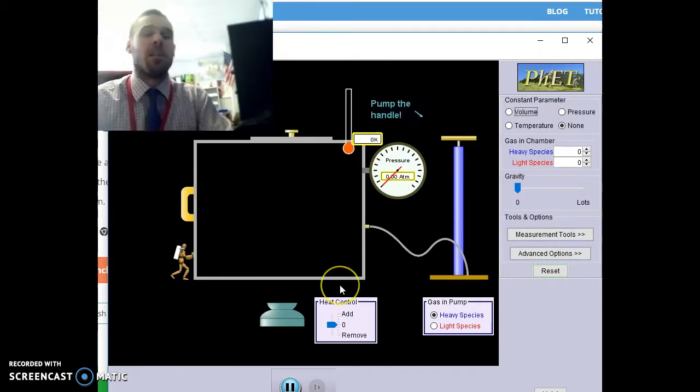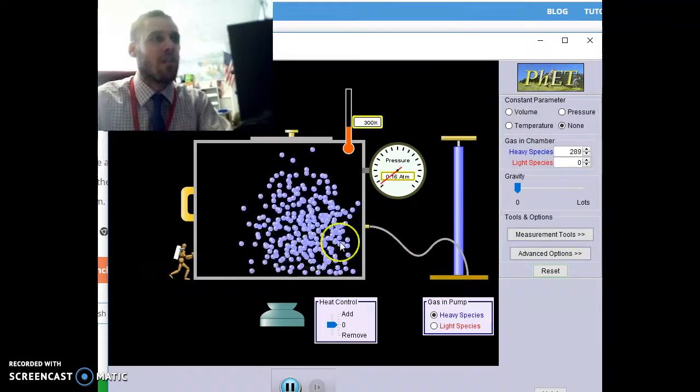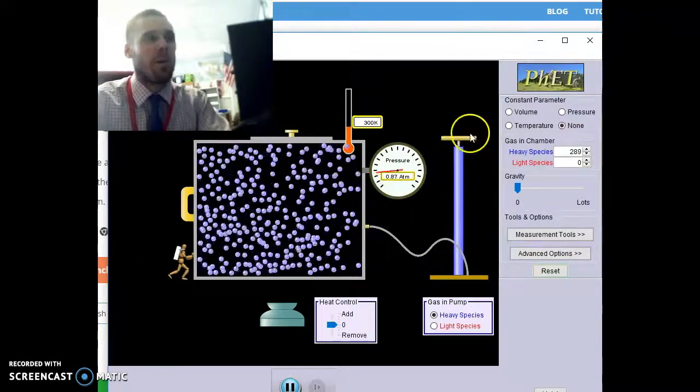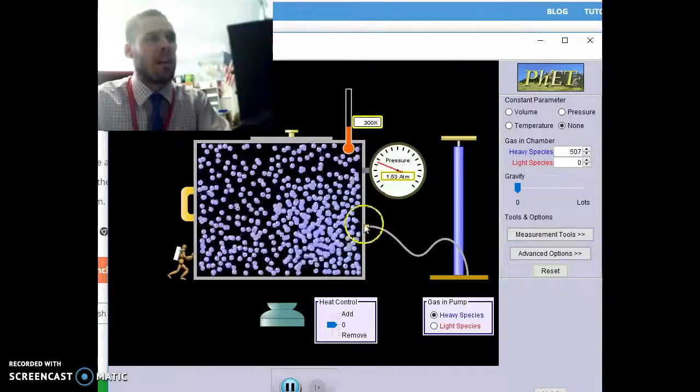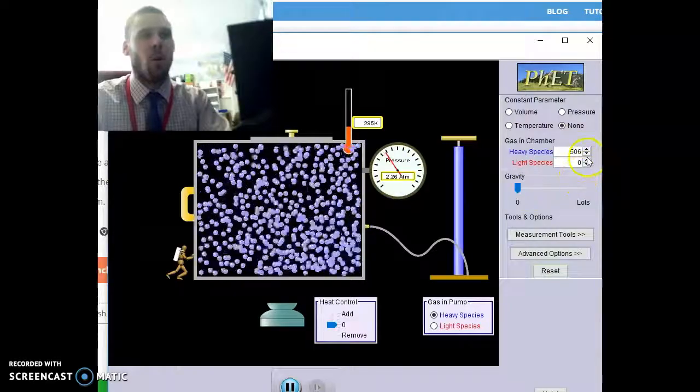The first of which is going to be the amount of particles and how pressure is going to respond. There's two ways that you can get particles into your gas chamber for this simulation. The first of which is just by using this pump handle and manually pushing in however many particles enter the gas chamber.